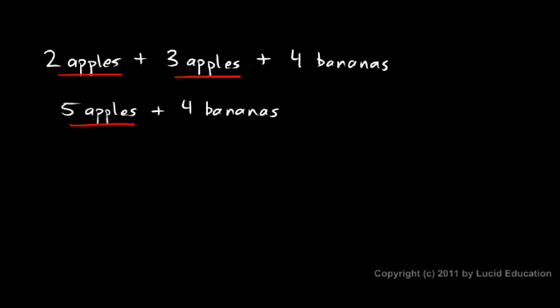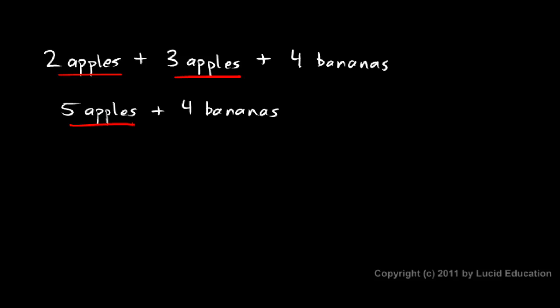Apply that same concept with variables. Instead of apples, think a, and instead of bananas, think b. We have 2a + 3a + 4b. Well, here's an a term, and here's an a term. So those two terms can be combined. The 2a plus the 3a gives me 5a, and then I still have the 4b right there.